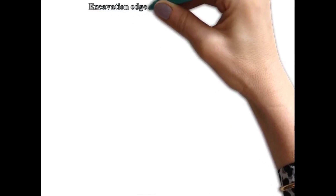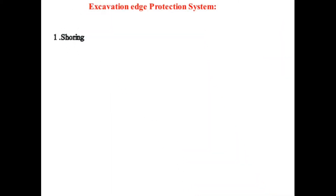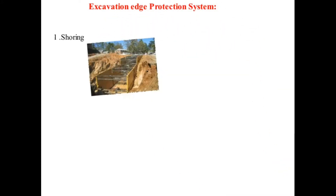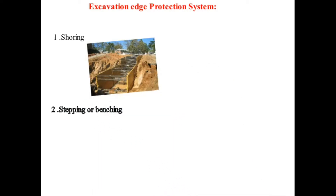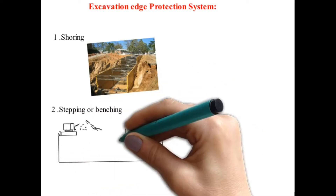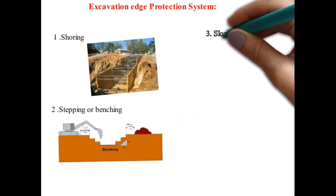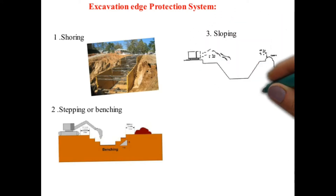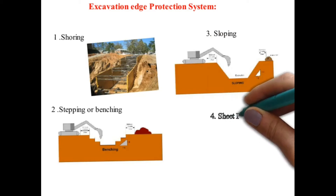Excavation edge protection systems: one, shoring; two, stepping or benching; three, sloping; four, sheet piling.